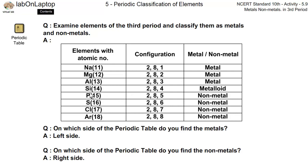Then, you have phosphorus. It is also non-metal. Sulphur is non-metal. Chlorine is non-metal.